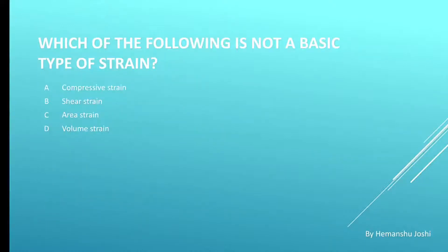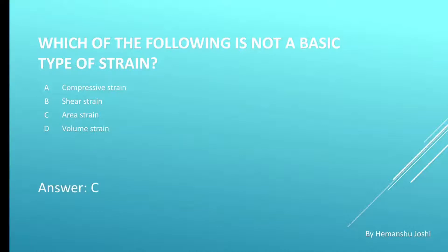Our next question is: which of the following is not a basic type of strain? Options are A. Compressive strain, B. Shear strain, C. Area strain, and D. Volume strain. Correct answer is C. Area strain.